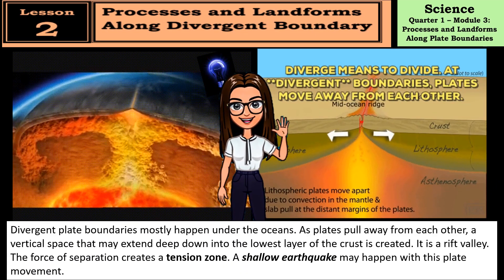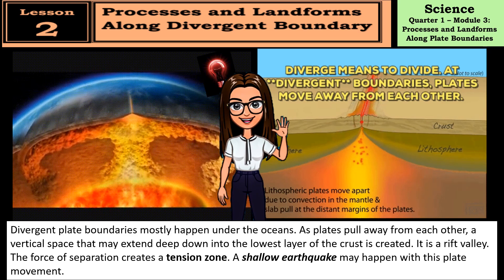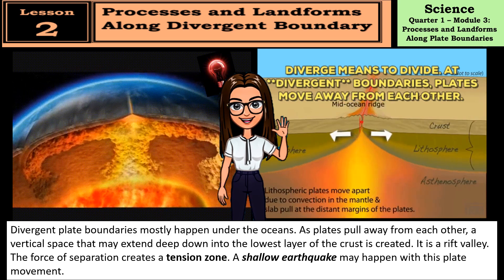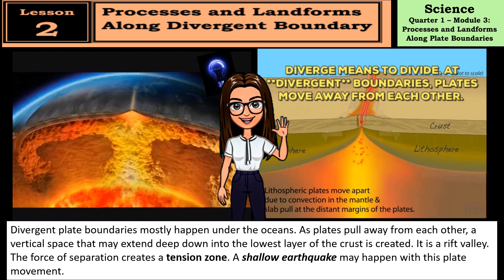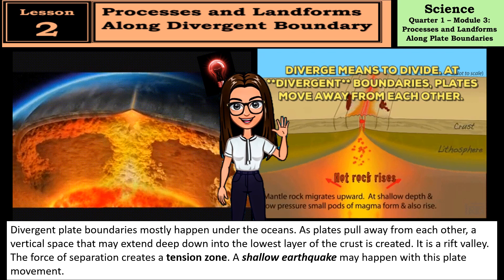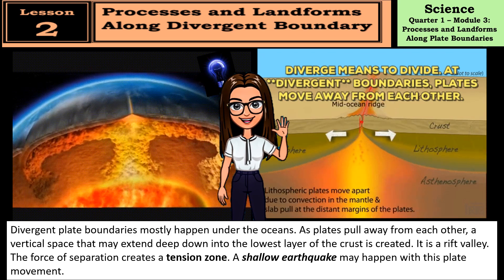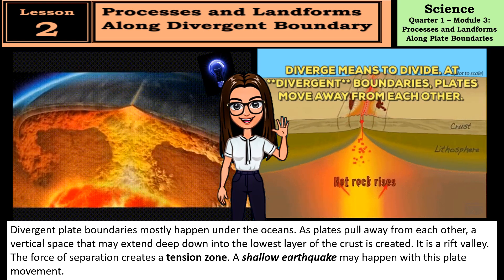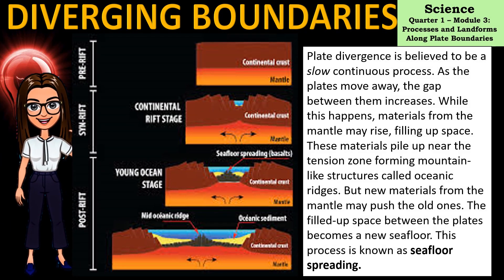The second lesson discusses processes and landforms along divergent boundaries. Divergent plate boundaries mostly happen under the oceans. As plates pull away from each other, a vertical space extending deep into the crust is created — this is a rift valley. The force of separation creates a tension zone and a shallow earthquake may occur. Plate divergence is believed to be a slow, continuous process, and as the plates move away, the gap between them increases while materials from the mantle rise, filling the space.